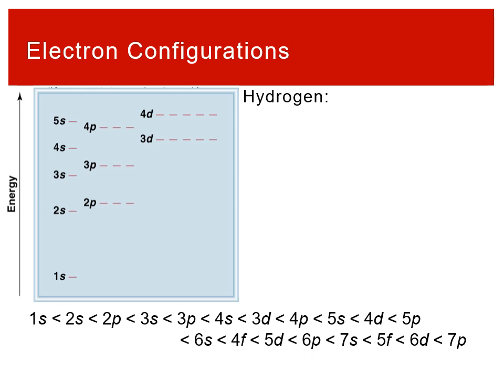Starting with hydrogen: it has one electron. We always ask what the lowest energy subshell available is, and the answer is 1s. Because it is s-type, it can hold two electrons. Hydrogen only has one, so it becomes 1s¹ — that superscript 1 just means you only have one electron. For helium with two total electrons, the same logic applies: 1s can hold two, so both go in there, giving us 1s².